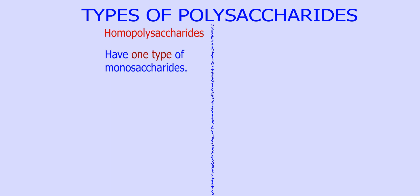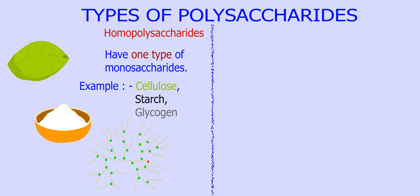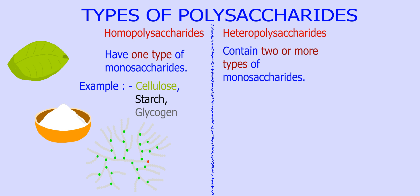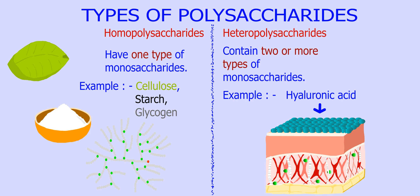Types of polysaccharides: Polysaccharides can be broadly classified into two classes. Homopolysaccharides are made up of one type of monosaccharide units. Examples include cellulose, starch, and glycogen. Heteropolysaccharides are made up of two or more types of monosaccharide units. An example is hyaluronic acid.